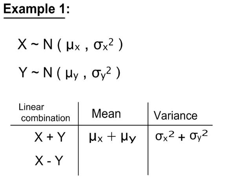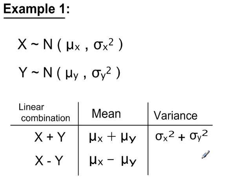Now if instead we subtract the variables, so x minus y, you do the same with the means. So in the same order, it's x minus y, so it's the mean of x minus the mean of y. Now with the variance, you only ever add variances together. So the variance is the variance of x plus the variance of y.